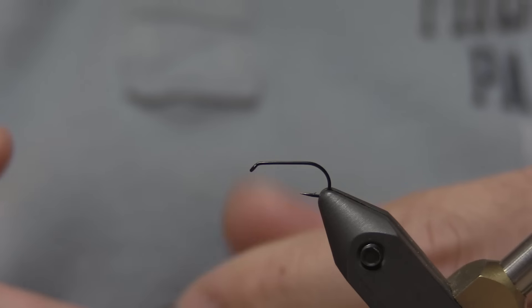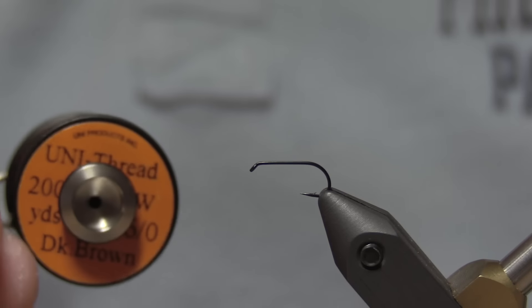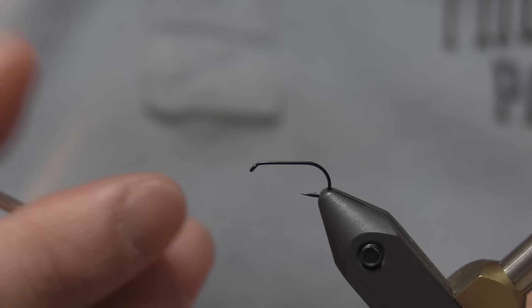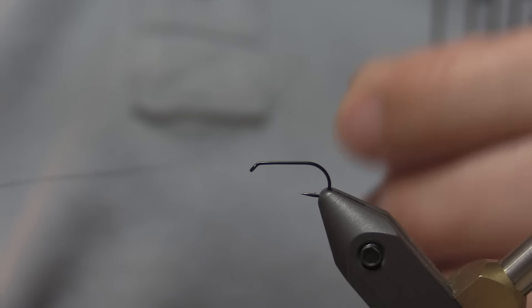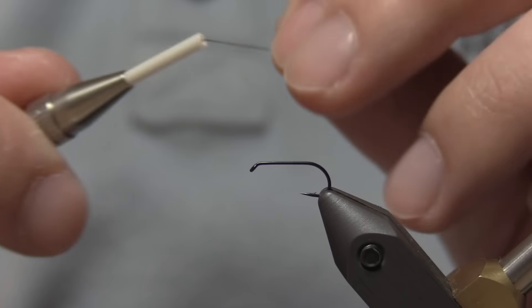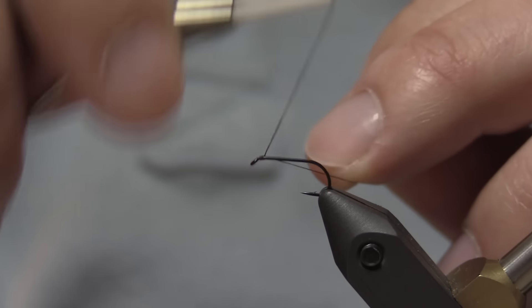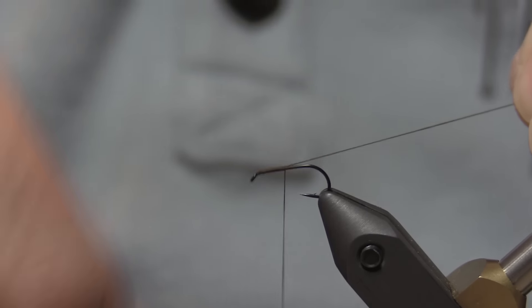So first thing you're going to do, I'm using some 6-Ot Dark Brown Uni. I usually use 8-Ot, but on this fly, just because I'm tying down some deer hair, I like a little bit more of a stout thread. You're going to start right behind the eye and just take it back down to the bend where I'll cut my waist and get ready to put the CDC in.